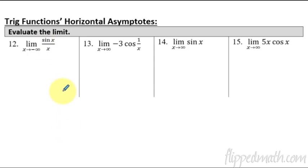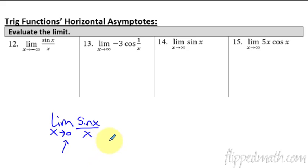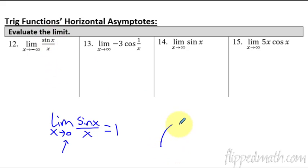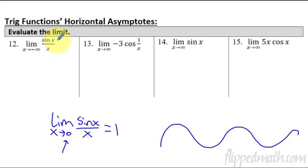Last set of problems. I want to point out the difference between sine x over x with x approaching 0 — that equals 1, from our special trig limits — versus x approaching negative infinity here. Do not get these confused; over half of you will miss this on the test. In this case, sine x on top just bounces back and forth between positive 1 and negative 1, but x approaching negative infinity means a really big number on the bottom and a small oscillating number on top. The limit is 0.